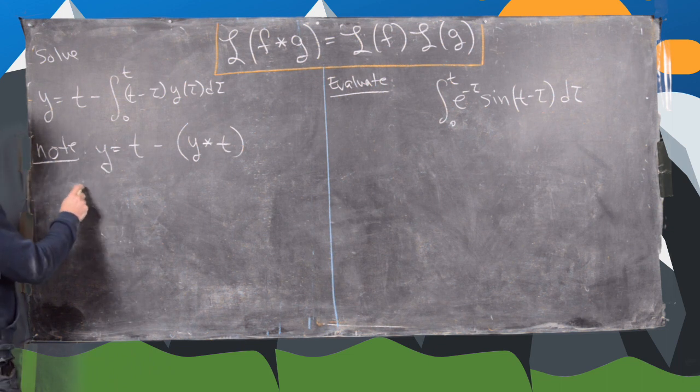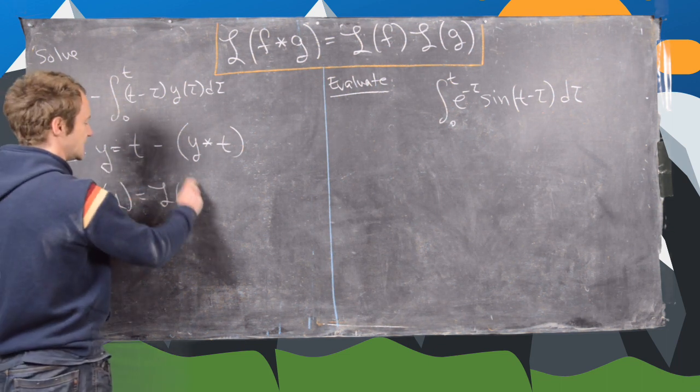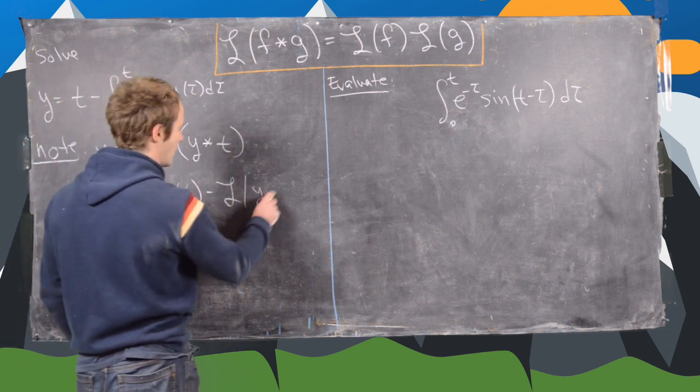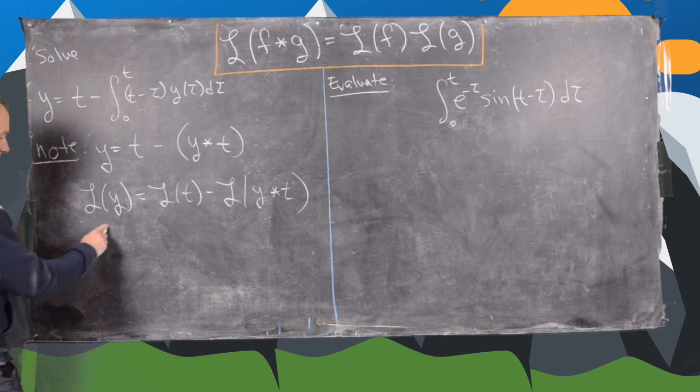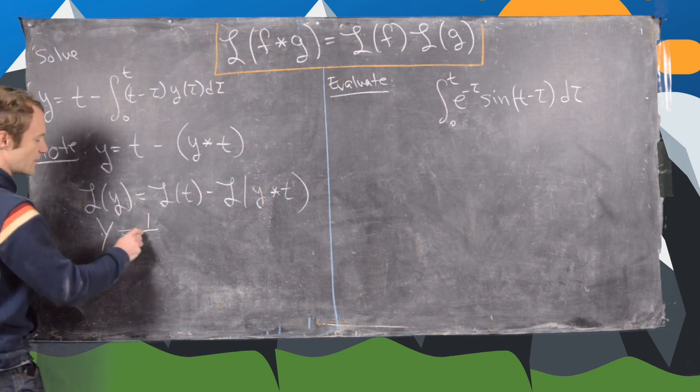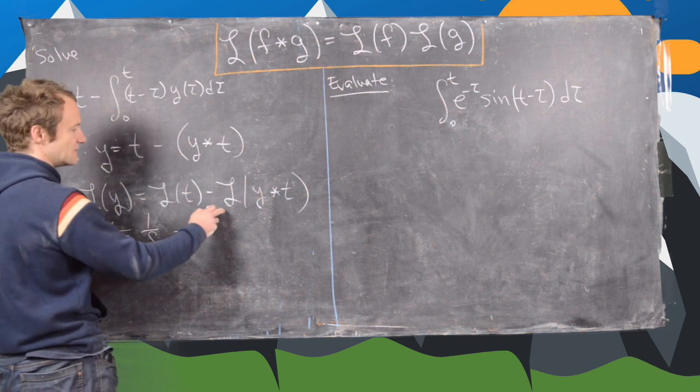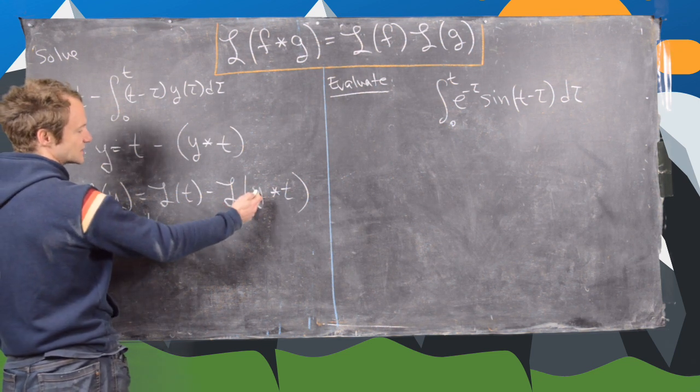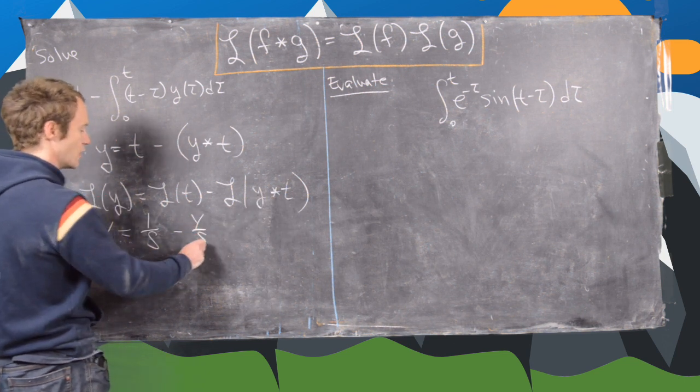Now we can take the Laplace transform of both sides. So we'll do L of y equals L of t minus L of y convolution t. We'll use this formula up here and we'll also use the notation that the Laplace transform of y is capital Y. Then this is one over s from a standard fact, and now this is going to be minus the Laplace transform of y times the Laplace transform of t, so that's going to be Y over s.